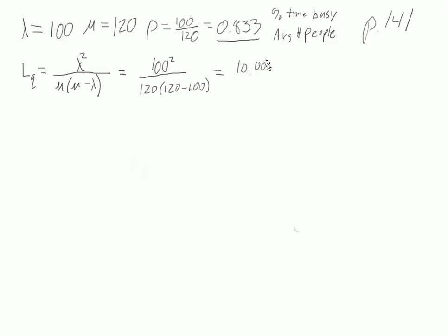So 100 squared, that is 10,000, and on the bottom we have 120 times 20, so that again is 10,000 divided by 120 times 2 is 2,400. So let's get out our calculator and let's see what that is. So we have 10,000 divided by 2400 is 4.17.